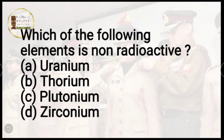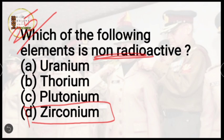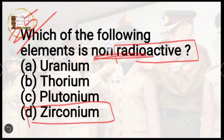Question 25: which of the following elements is non-radioactive? Options are uranium, thorium, plutonium, or zirconium. Zirconium is non-radioactive. Radioactive elements have unstable nuclei that constantly emit atomic radiation in order to achieve stability — just as atoms seek stability by losing or gaining electrons. Zirconium does not do this, so it is non-radioactive.